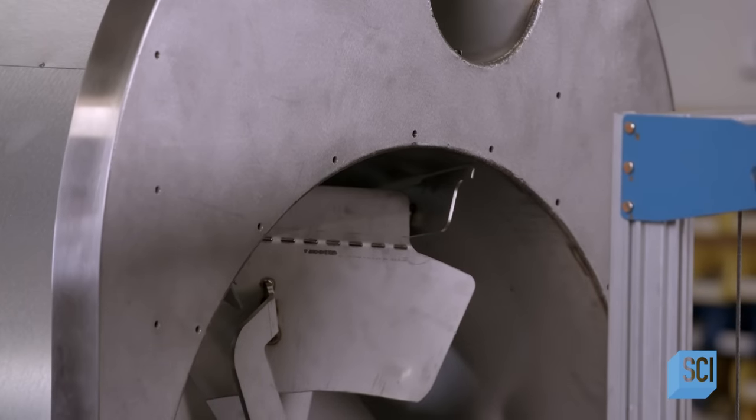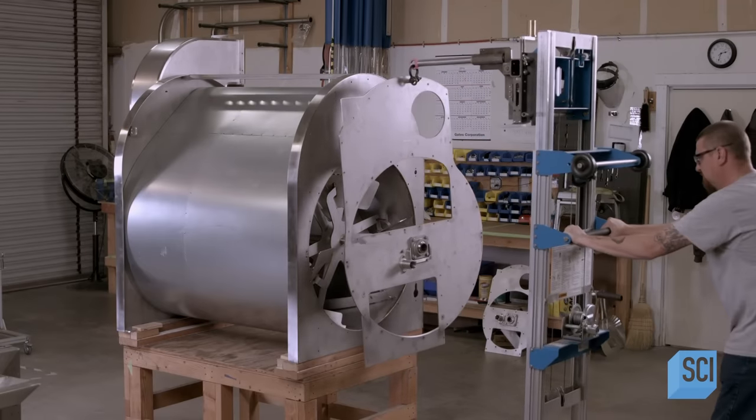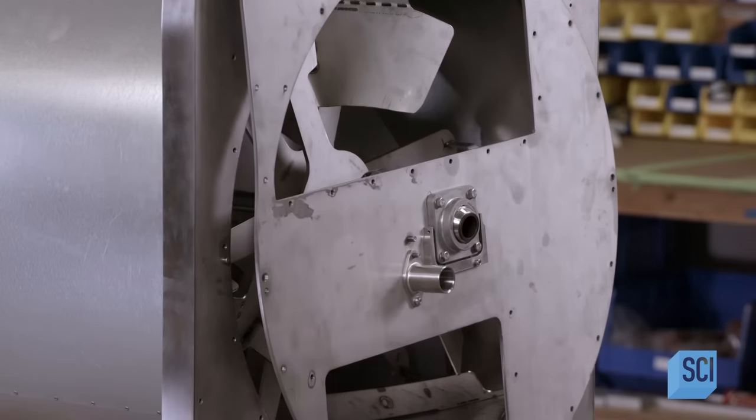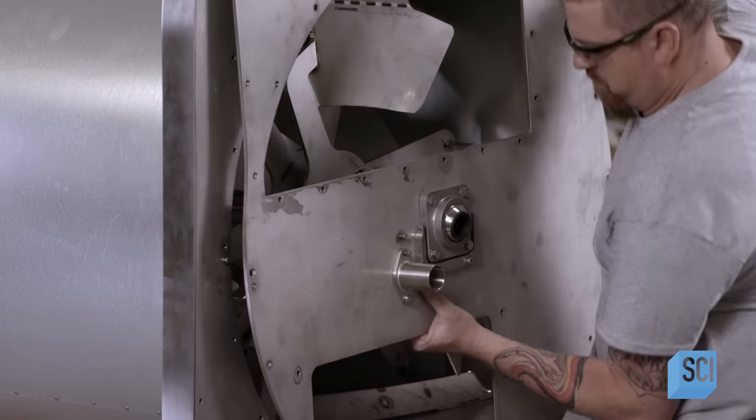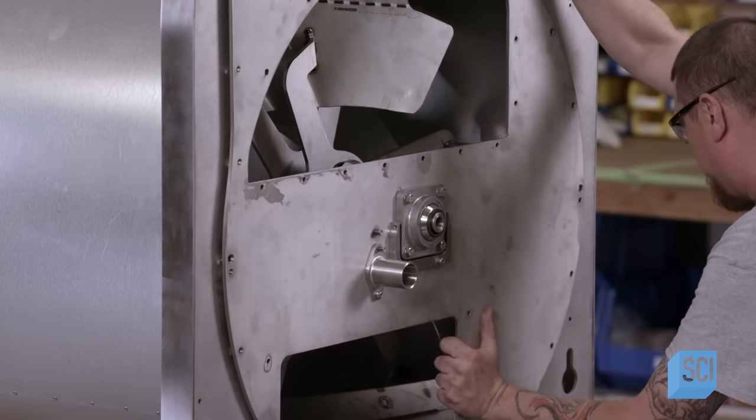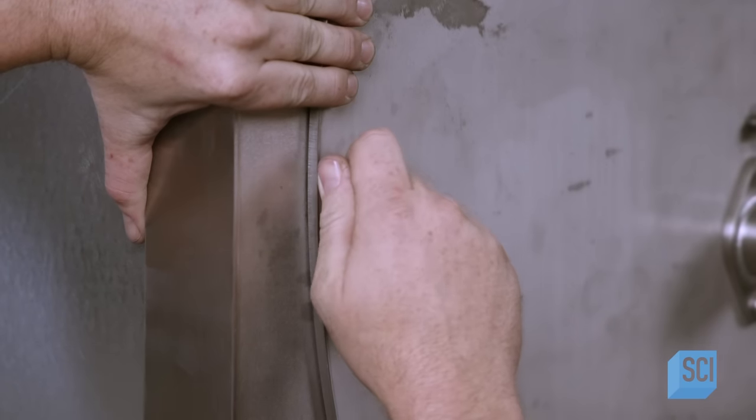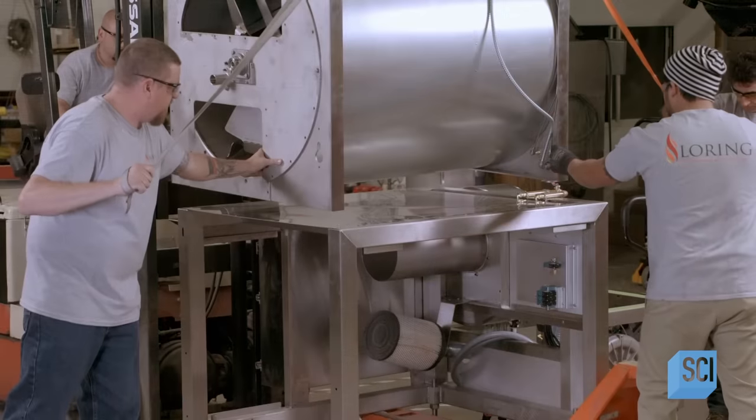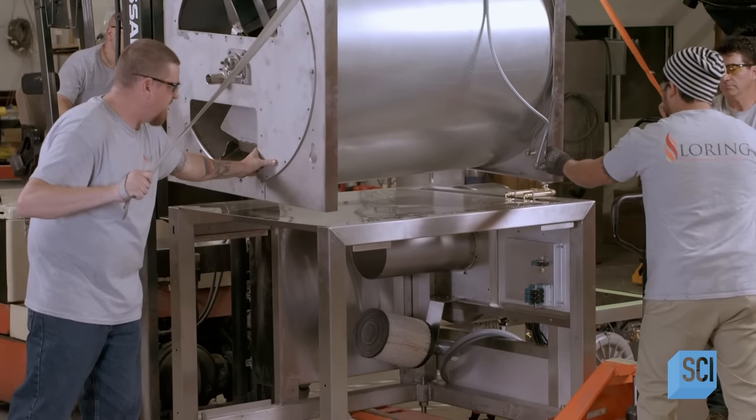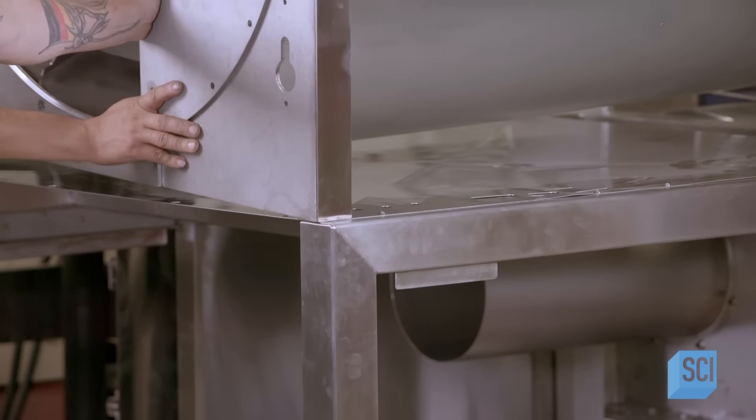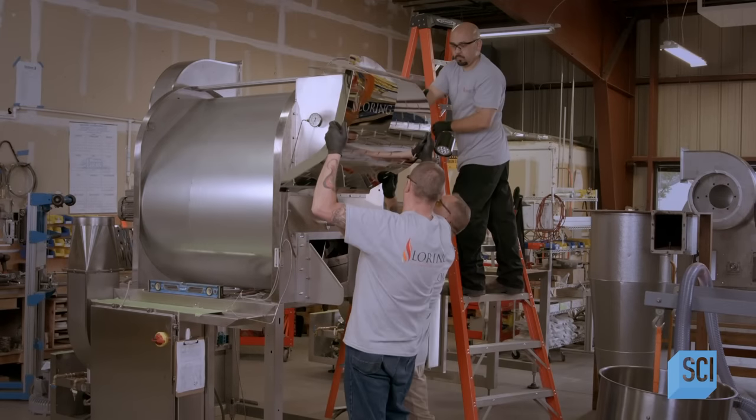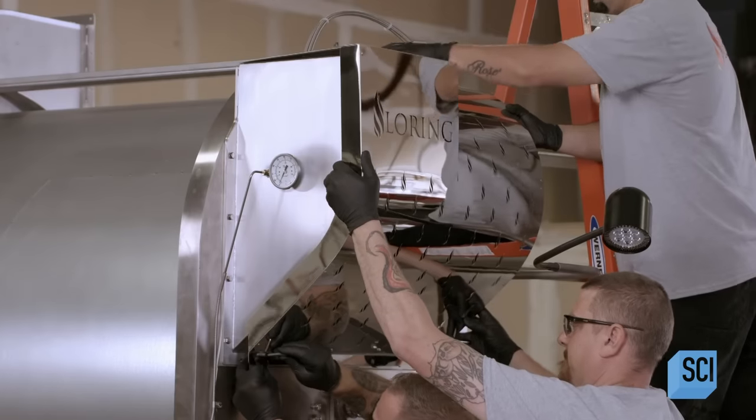Once they install the paddle, a worker closes up the roast chamber with a faceplate. Alignment pins ensure the faceplate is properly positioned. The paddle shaft protrudes through a bearing in the faceplate. The assembly team uses a hoist to lift the heavy chamber and position it on top of the coffee roaster's stainless steel support frame. They install the heat shield that was cut by the laser cutter and bent to shape in the press brake.